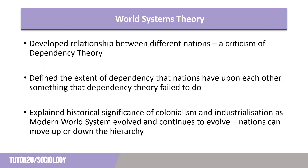This answered a criticism of dependency theory by defining the extent to which nations are dependent upon one another. With dependency theory, this was a simple binary relationship — the rich and the poor. With world systems theory, this was expanded. A further benefit was that it explained the historical significance of colonialism, suggesting that nations with colonial pasts often had interdependent relationships with their former masters, retaining trade links that stretched back hundreds of years. For example, Caribbean islands were often reliant upon the UK to purchase many of their exports, such as coffee, bananas, and other cash crops.